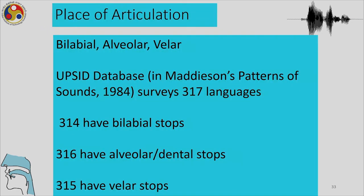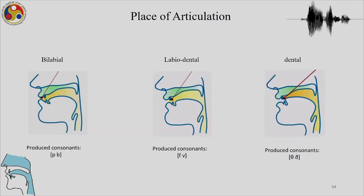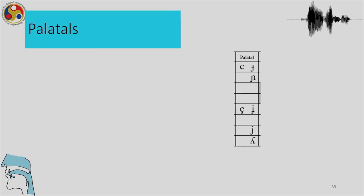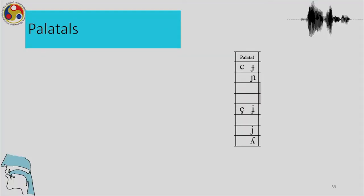In the UPSID database of 317 languages, 314 have bilabial stops, 316 have alveolar/dental stops, and 315 have velar stops. Coming now to palatals: we can see palatal stops, palatal nasals, palatal fricatives, and palatal approximants — though palatal trills do not exist, unlike labials.